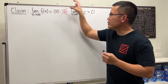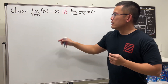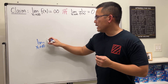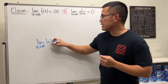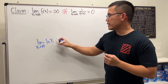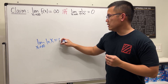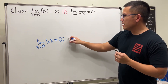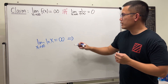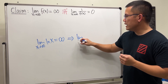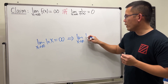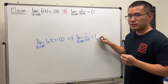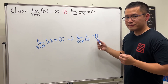For example, going from the first direction to the second: if the limit as x approaches infinity of the natural log of x equals infinity, then we can say the limit as x approaches infinity of 1 over ln(x) equals zero.